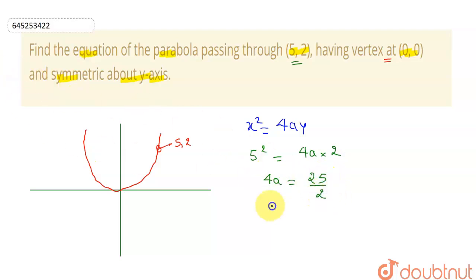So I can write this equation now: x² = 4a is 25/2 times y. So it implies my equation is 2x² = 25y. So that will be equation of my required parabola.